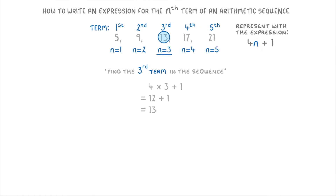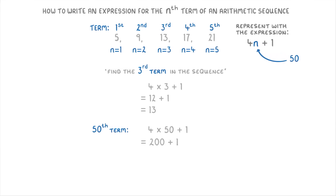Obviously for the third term, we could have just looked at our sequence and seen that it's 13. But for bigger terms, like say the 50th term, we can't just look at our sequence, and it would take ages to keep adding 4 until we get to the 50th term. So instead, because we know that n will be 50, we can plug 50 into the expression to get 4 times 50 plus 1, which is 200 plus 1, so the 50th term is 201.